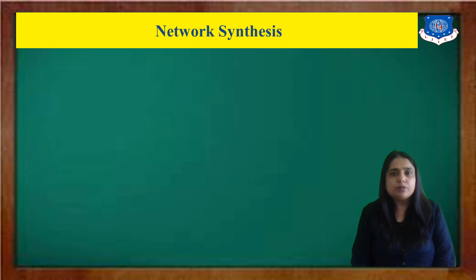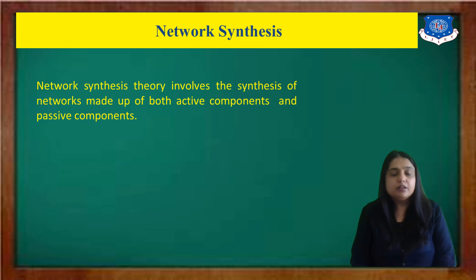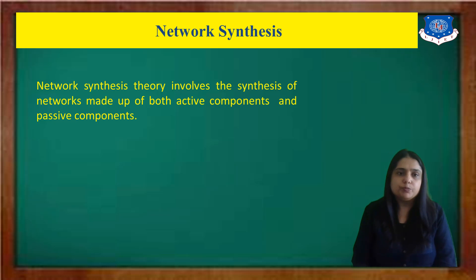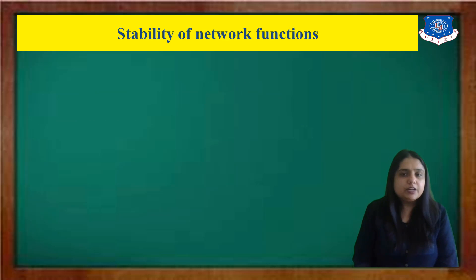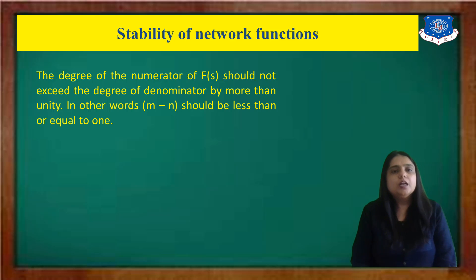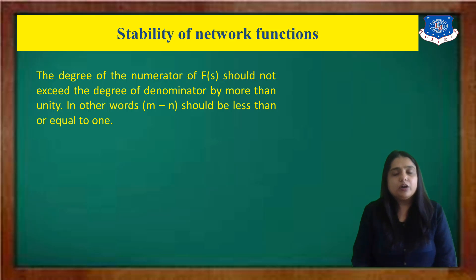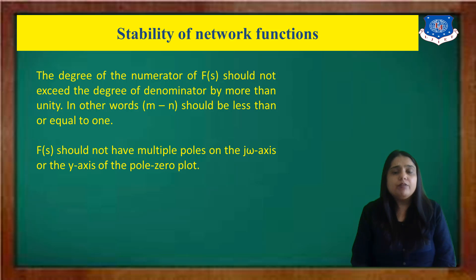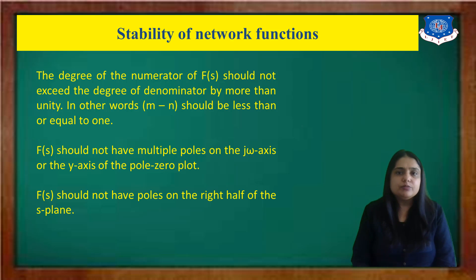Now we discuss the last topic: network synthesis. Network synthesis involves the synthesis of networks made up of both active and passive components. For stability of a network function: first, the degree of the numerator should not exceed the degree of the denominator, i.e., m−n ≤ 1. Second, F(s) should not have multiple poles on the jω axis. Third, F(s) should not have poles on the right-hand side of the s-plane — any such pole makes the system unstable.